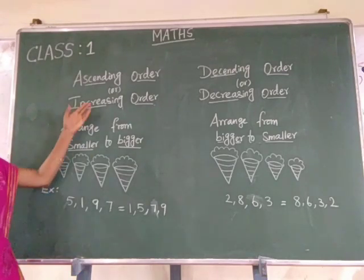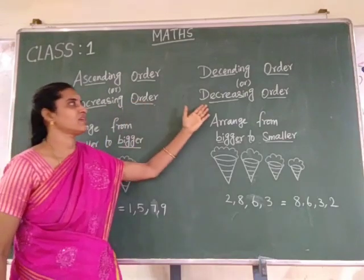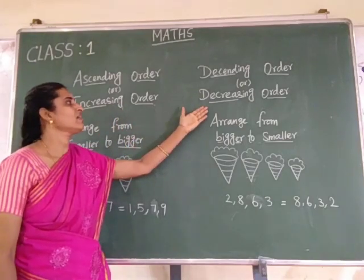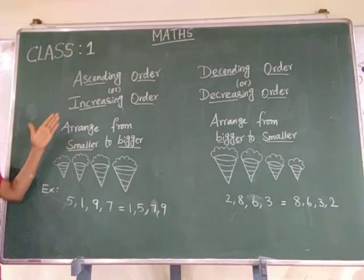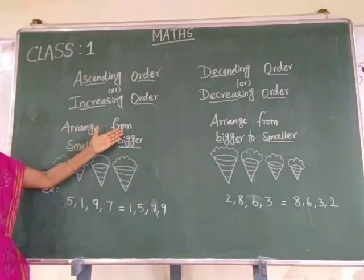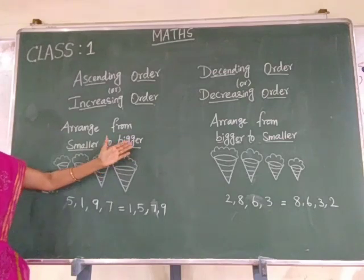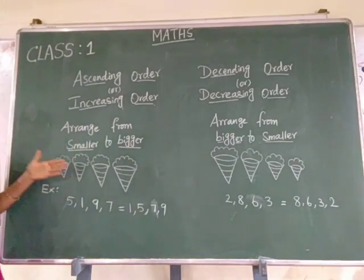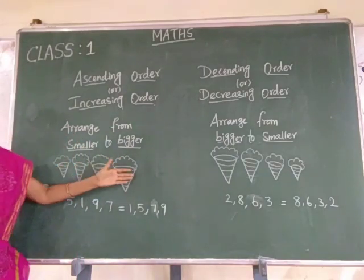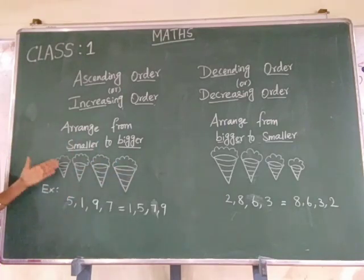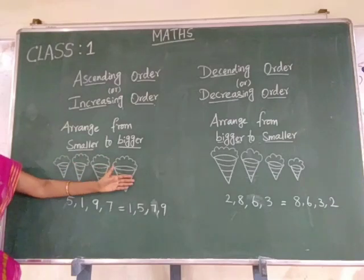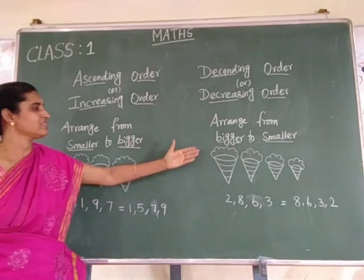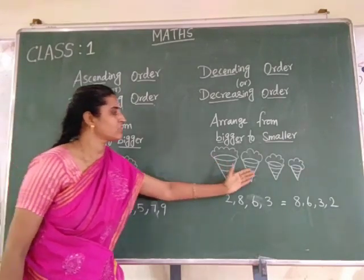Let me teach you to arrange numbers in ascending order and descending order. Ascending order, or increasing order. Descending order, or decreasing order. Ascending order means arrange from smaller to bigger. Descending order means bigger to smaller. See this picture — here the ice creams are arranged in ascending order, which means from smaller to bigger. And here the ice creams are arranged in descending order, which means bigger to smaller.